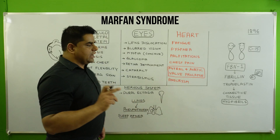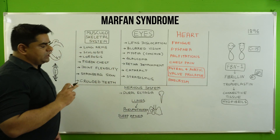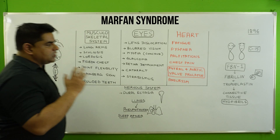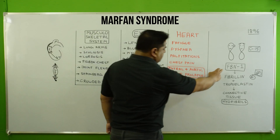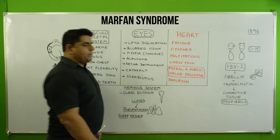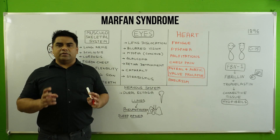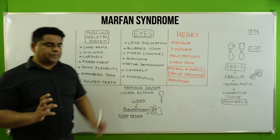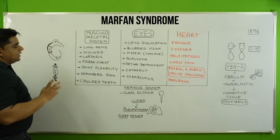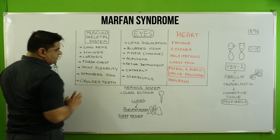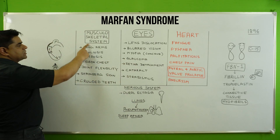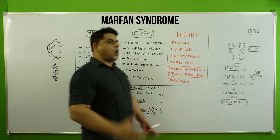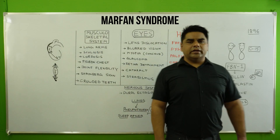The suspensory ligaments hold the lens and adjust it as we see near or far away. In Marfan syndrome, mutation of the FBN1 gene causes problems in the myofibrils — the abnormal myofibrils also prevent normal myofibrils from functioning. It generally affects three types of systems, the first being the musculoskeletal system.